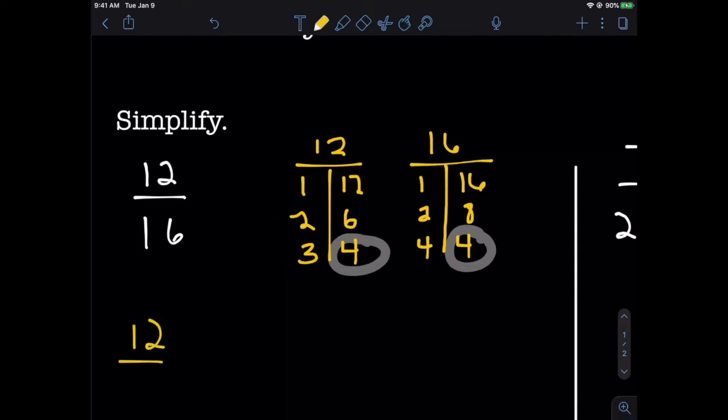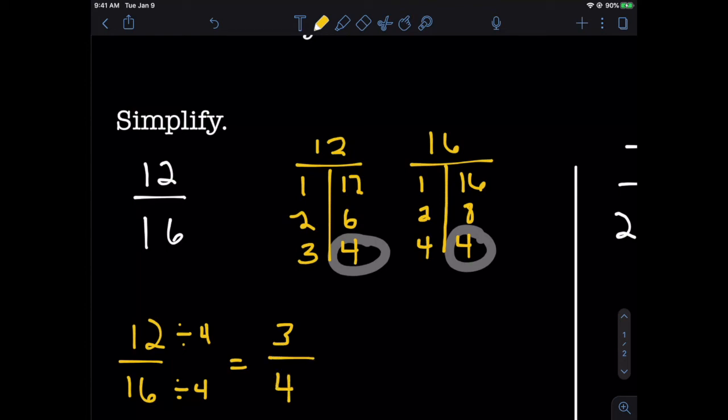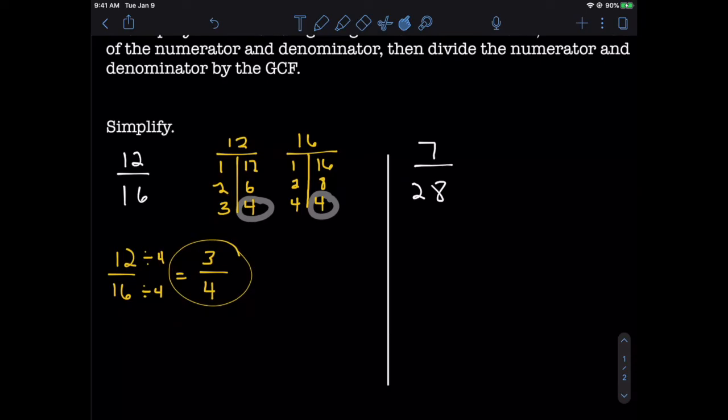So our final step here is to divide the numerator and denominator by the GCF that we found. So 12 divided by 4 is equal to 3. 16 divided by 4 is equal to 4, which tells us the simplified version of 12 sixteenths is 3 fourths. Let's look at another one.